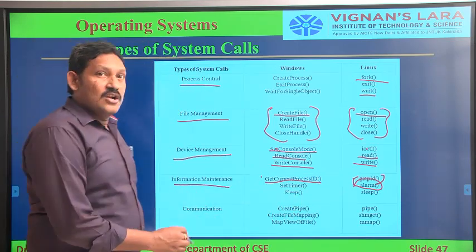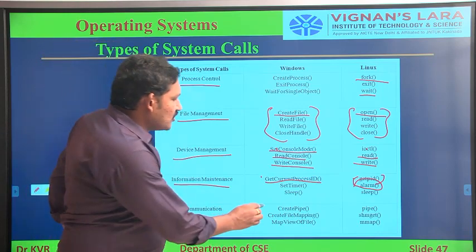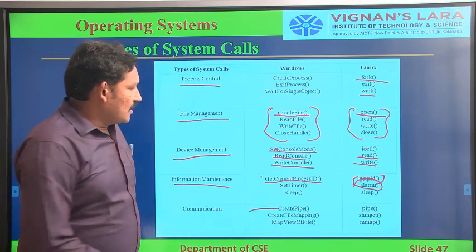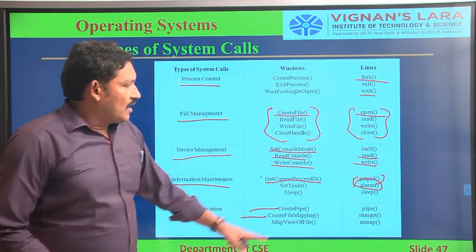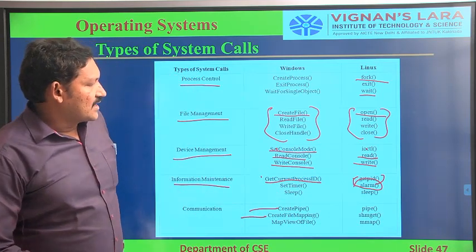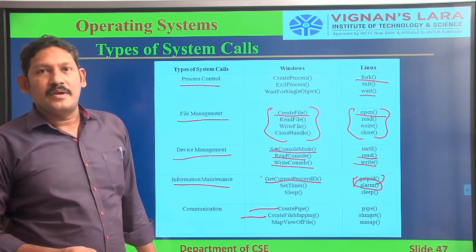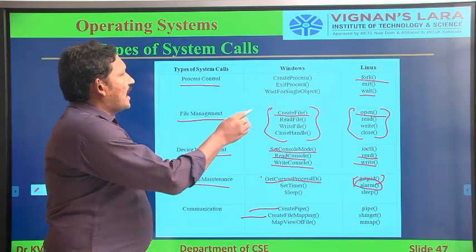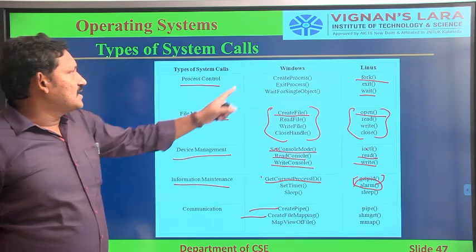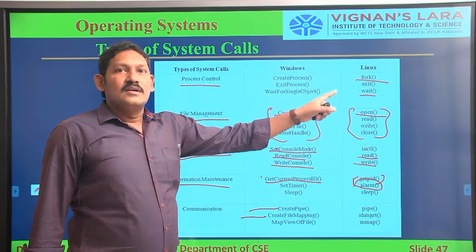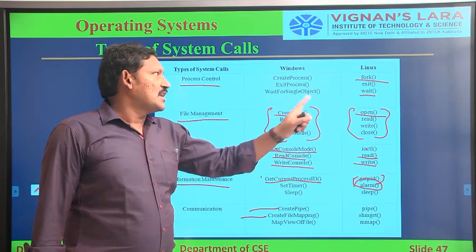For communication, in order to establish communication between two or more processes: in Windows we use 'CreatePipe', and in Linux we use 'pipe'. 'CreateFileMapping' in Windows maps to 'shmget' in Linux, and 'MapViewOfFile' maps to 'mmap'. These are five different system call types and the sample commands used in different operating systems like Windows and Linux.